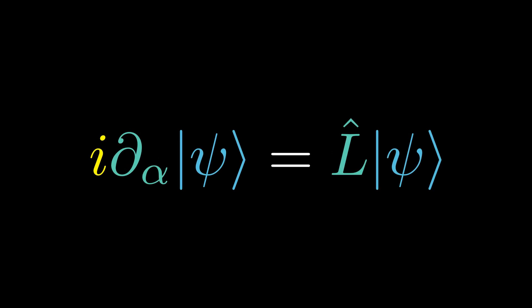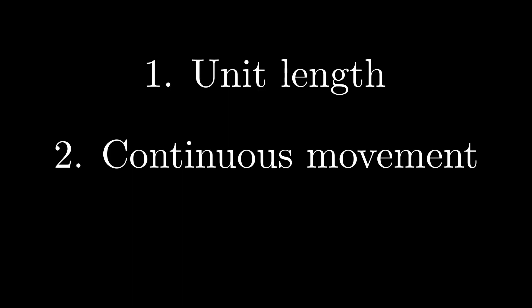Here's a reminder of the three rules that must be kept when we are evolving the quantum state vector. Rule 1: the quantum state vector always has unit length. Rule 2: the movement of the state vector must be continuous. Rule 3: the state vector cannot be stationary.